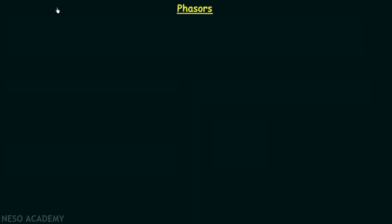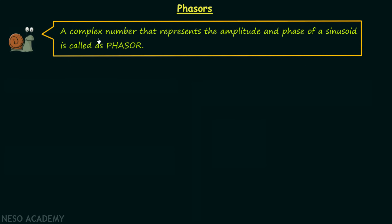We are done with sinusoids and now we will have a discussion on phasors. A phasor is a complex number that represents two things of a sinusoid: the amplitude and the phase.